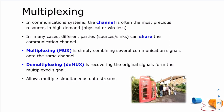So back to today's lecture — the topic is multiplexing. Multiplexing simply means having several communication signals share the same channel. Demultiplexing is the opposite: recovering the original signals from the multiplexed signal. The channel is always in high demand — you've got lots of users all wanting to use it. Multiplexing is a way in which the channel can be shared so that multiple simultaneous data streams can use the same channel at the same time.